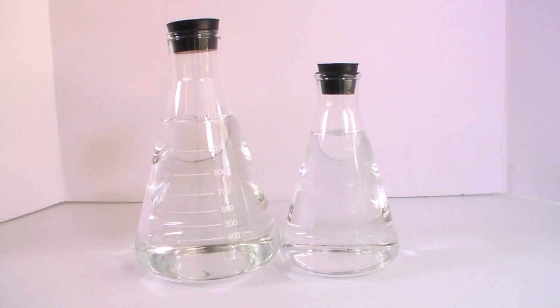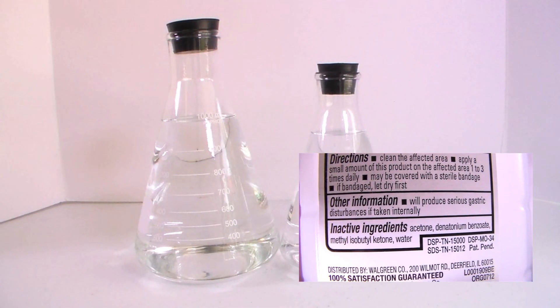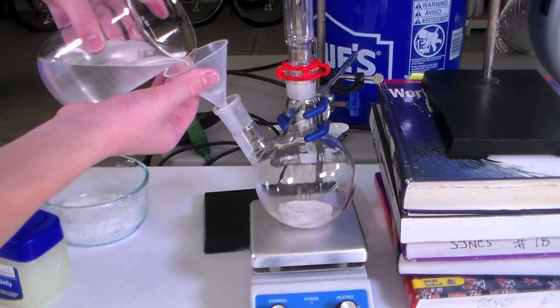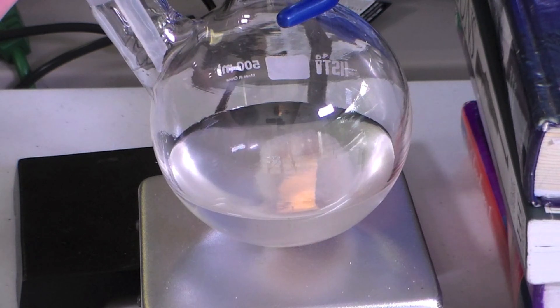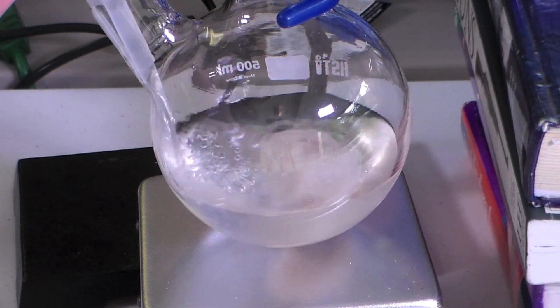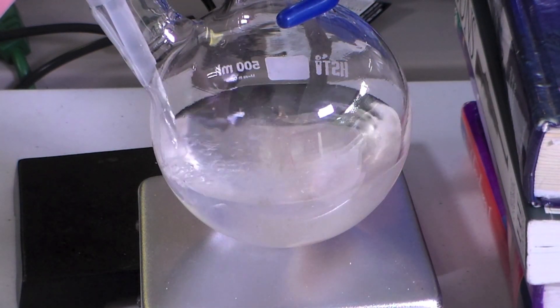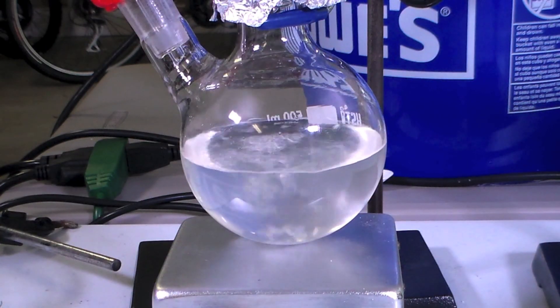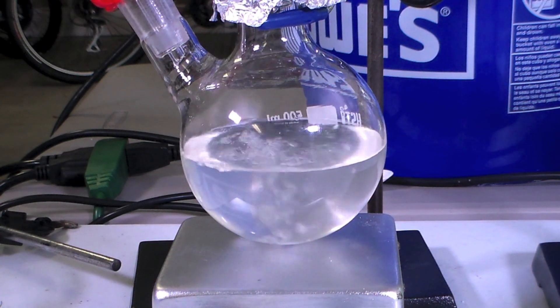Since my ethanol only contained a few percent acetone, I did not fractionally distill all of it and only distilled about 200 milliliters for demonstration. If you are okay with acetone contamination, you can go straight to the simple distillation and just distill off the ethanol-acetone mixture from the magnesium sulfate. In the end I was left with about one liter of ethanol containing a small amount of acetone contamination.